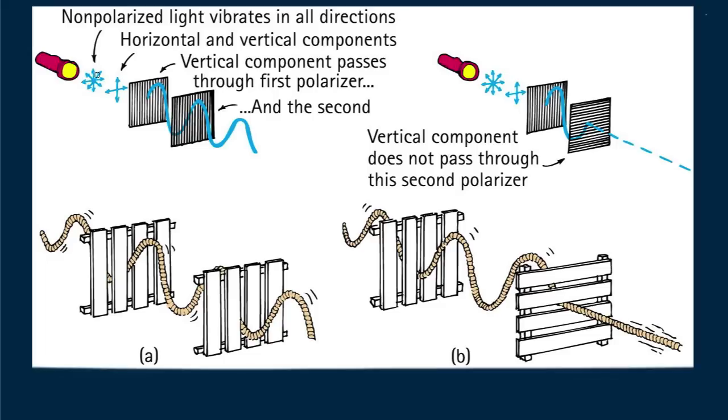Note that non-polarized light from the flashlight can be represented by the blue horizontal and vertical components. And the vertical component of that light passes through the pair of polaroids. The rope being shaken between slats of fences gives the idea.